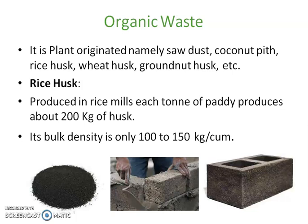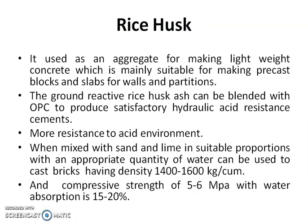Rice husk ash is produced from the rice mill. Approximately, when you grind 1 ton of paddy, you will get 200 kg of husk. That 200 kg of husk, when left as a waste material, disposal will become a greater problem. It has a bulk density of 100 to 150 kg per cubic meter. By using this in construction materials or the manufacture of bricks, we can use it in load-bearing walls also. It is more resistant to acid environments.